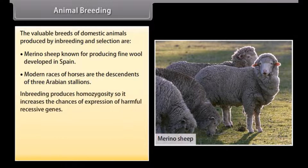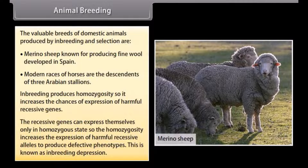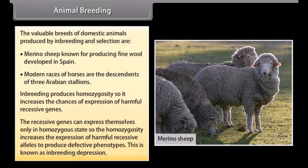Inbreeding produces homozygosity, so it increases the chance of expression of harmful recessive genes. The recessive genes can express themselves only in homozygous state, so homozygosity increases the expression of harmful recessive alleles to produce defective phenotypes. This is known as inbreeding depression.